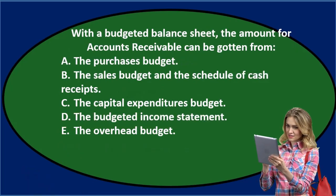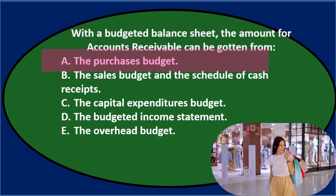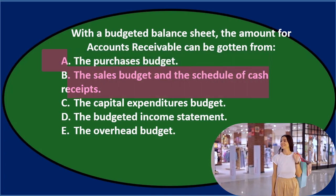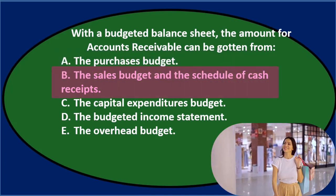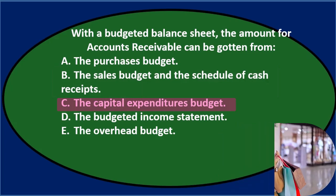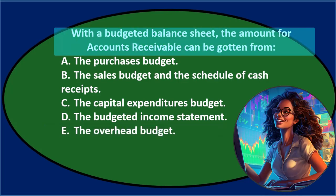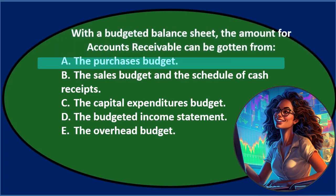Next question: With a budgeted balance sheet, the amount for accounts receivable can be gotten from: A, the purchases budget; B, the sales budget and the schedule of cash receipts; C, the capital expenditures budget; D, the budgeted income statement; or E, the overhead budget. Let's go through this again using the process of elimination.